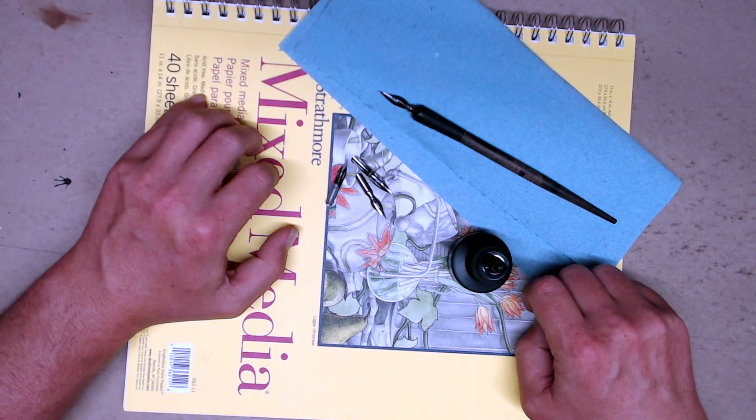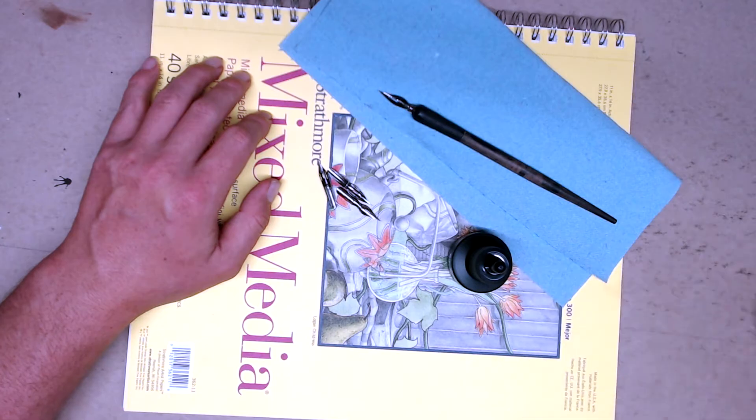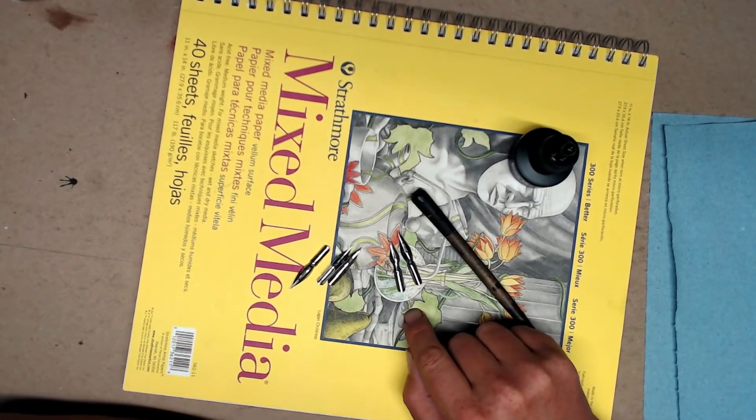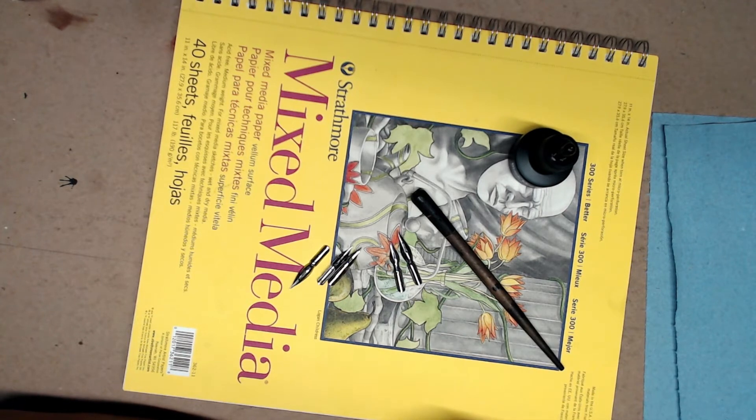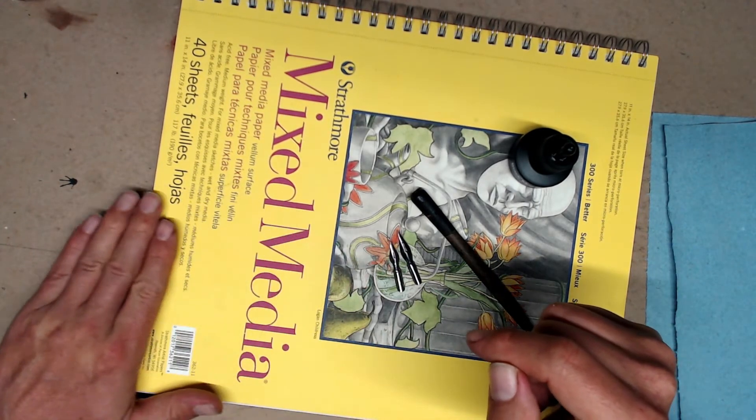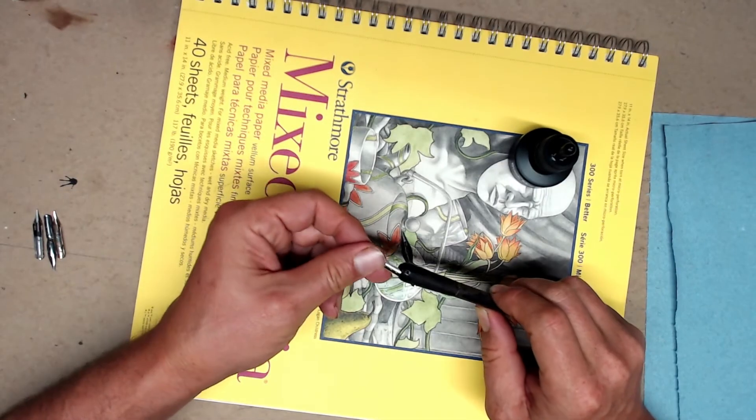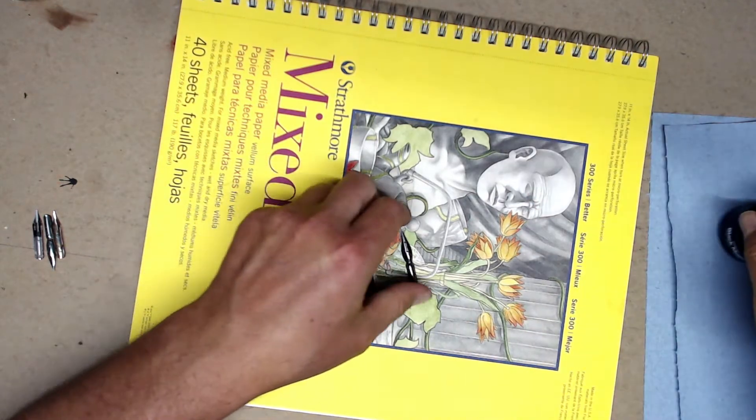Okay, so now let's talk about some of these nibs that I have and their respective properties. These two nibs are on your materials list. They're the Hunt Globe 512 and 513EF. These three are recommended and we're going to talk about them later. Let's start off with the 512. Let's put it in.